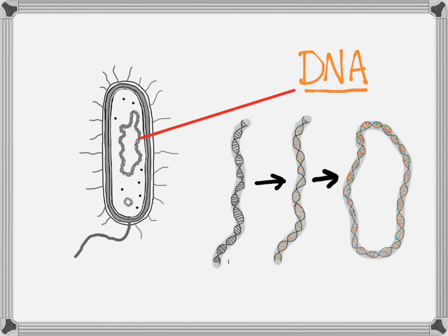That's what gets copied. Every single little chemical piece of a rung has to be copied perfectly, absolutely perfectly, if we're going to have an identical daughter cell.